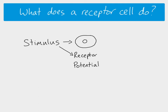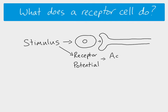We've looked at action potentials, which are all to do with depolarization of the membrane. When that depolarization happens in a receptor cell, we call it a receptor potential. The stimulus causes a receptor potential in the receptor cell, and that could then potentially cause an action potential in the sensory neuron - though not always, because just because you have a receptor potential doesn't mean you'll always get an action potential.